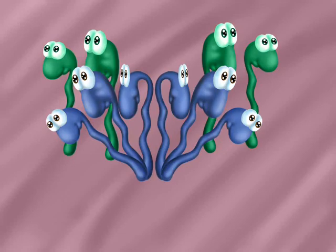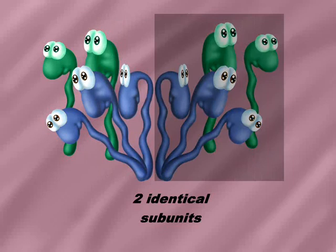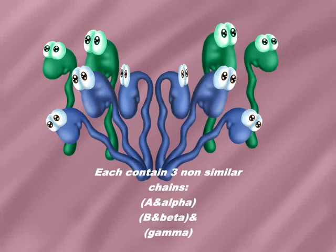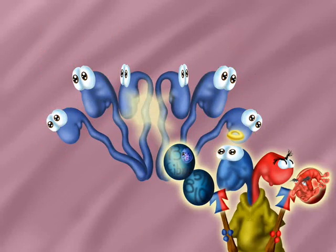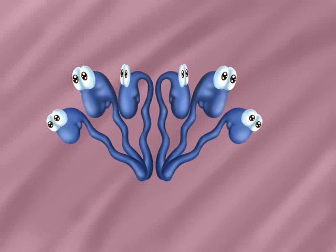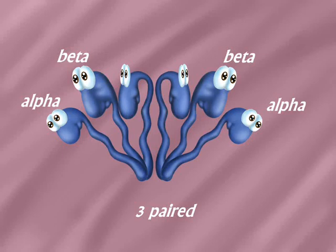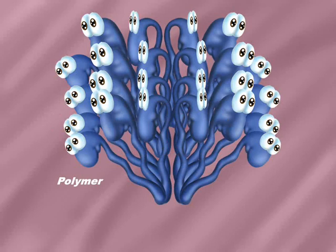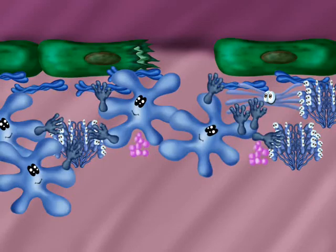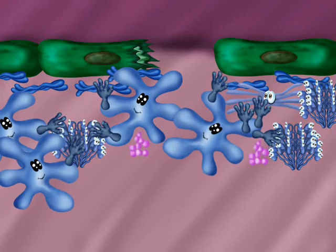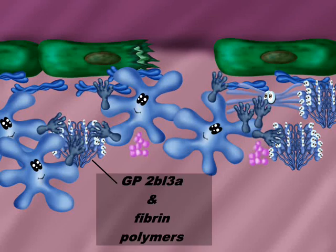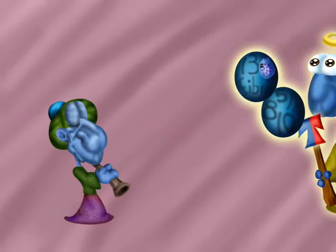The most important action of thrombin is fibrin formation. Fibrin is formed from fibrinogen, the inactive form. Fibrinogen consists of two identical subunits, each containing three non-identical polypeptide chains: alpha, beta, and gamma. Thrombin cleaves fibrinogen to produce fibrin monomer, consisting of three paired alpha, beta, and gamma chains. Fibrin monomer is converted to polymer by hydrogen bonding. Clot retraction occurs with the aid of glycoprotein 2B3A and fibrin polymers, and thrombin activates factor 13.